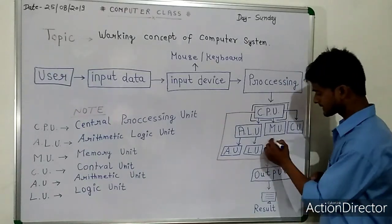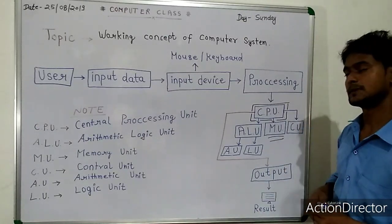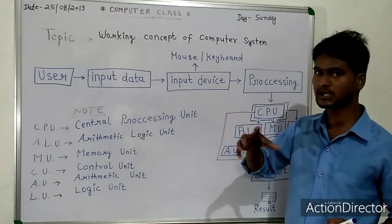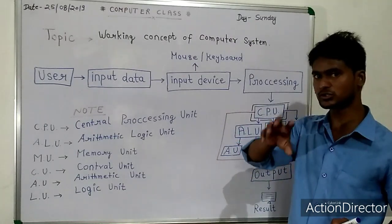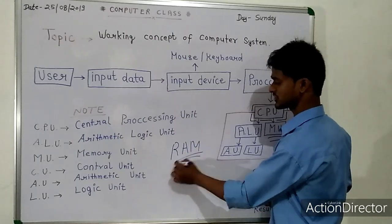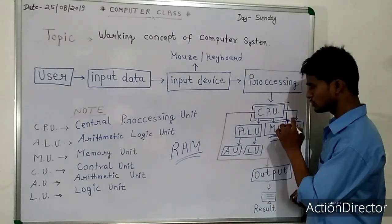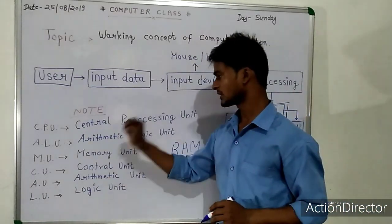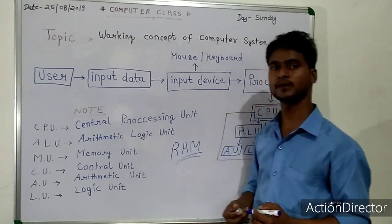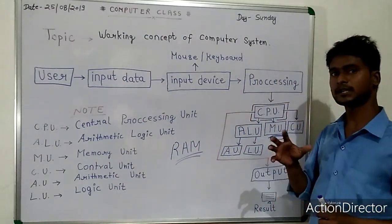Now we will talk about the memory unit. Memory unit means that when users input data, we will store that data in our RAM. In our RAM, there is a storage place. That is why the CPU should use it. MU stands for memory unit, and the CPU parts use it for storing data.